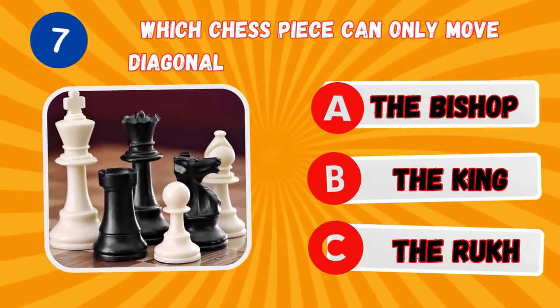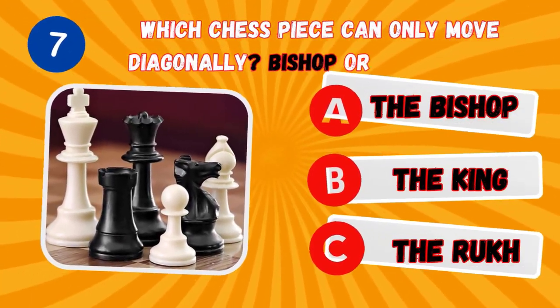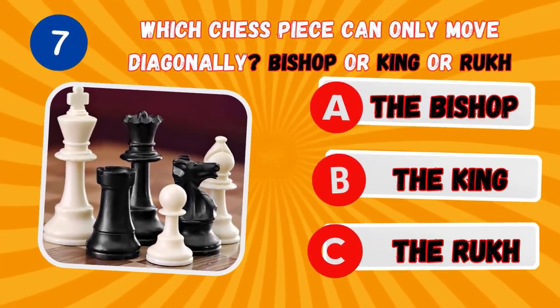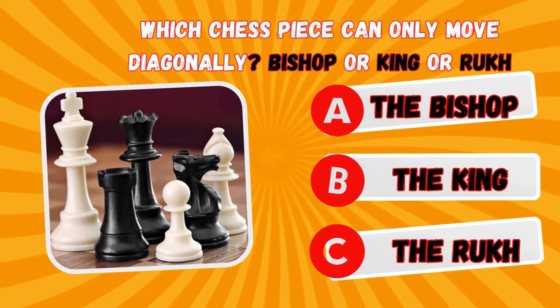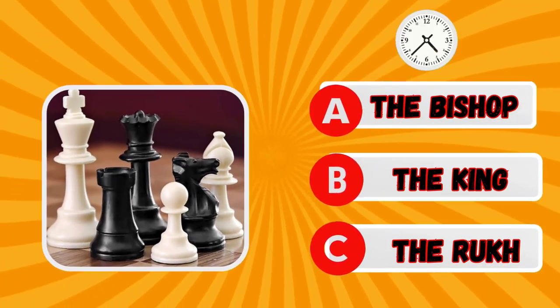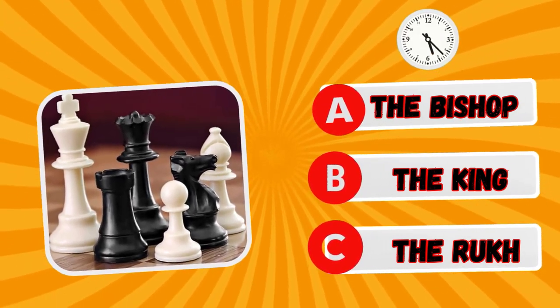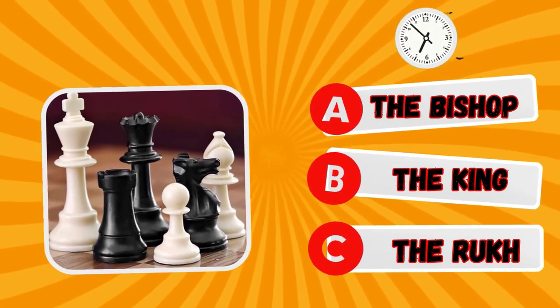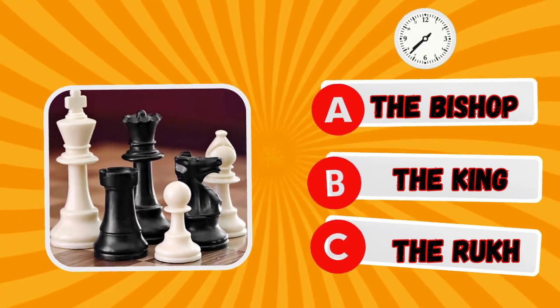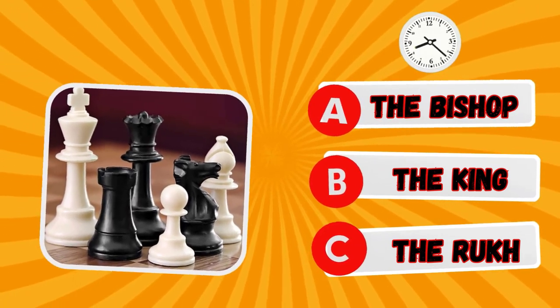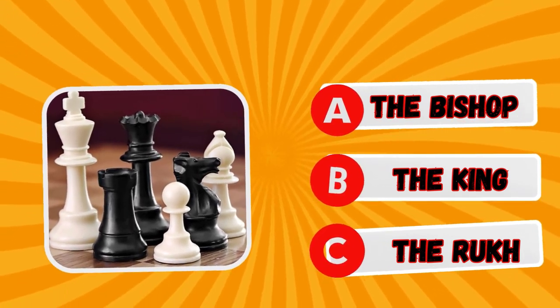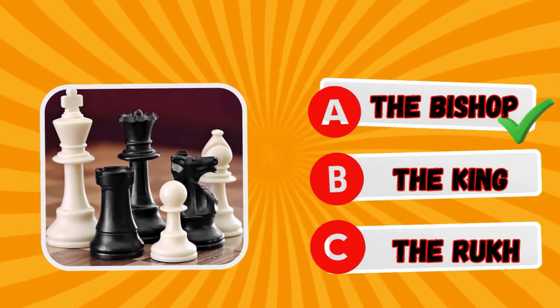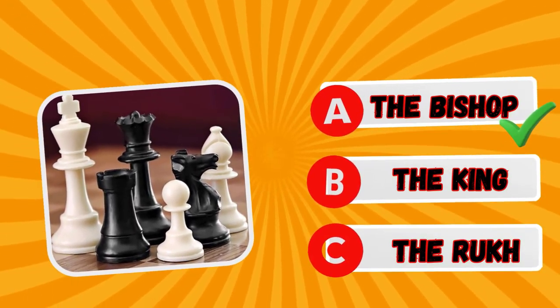Which chess piece can only move diagonally? The bishop, the king, or the rook? The bishop!